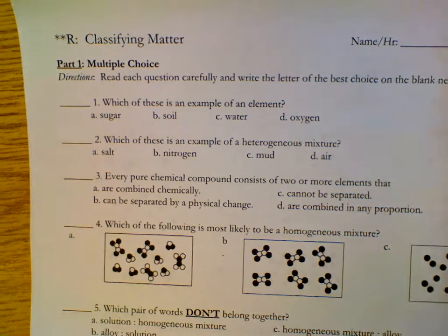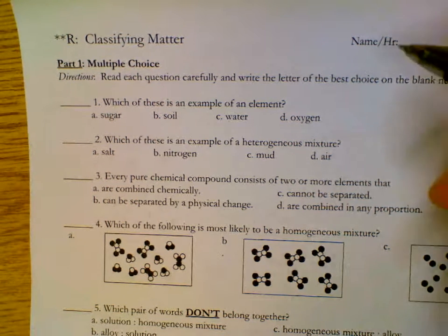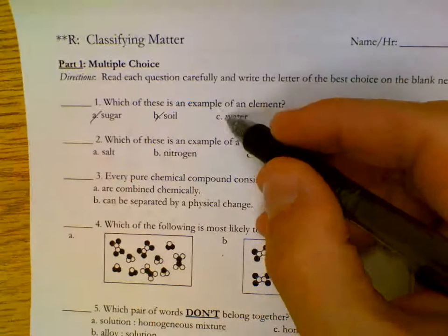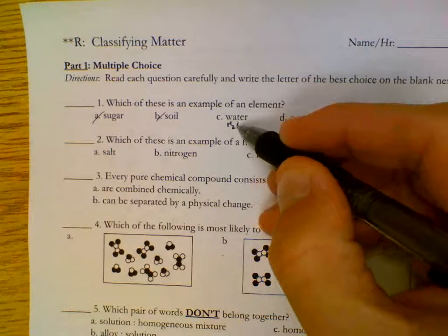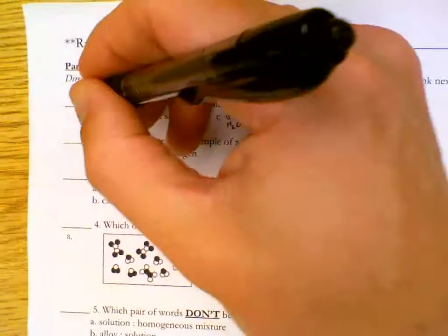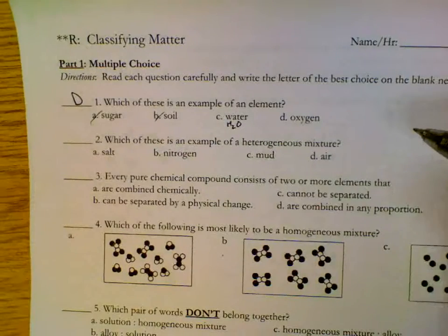Which of these is an example of an element? Elements are found on the periodic table. Sugar is not found. Soil is not found on the periodic table. Water is H2O. A lot of students picked that one accidentally, but since it has two elements, that's not correct. D, oxygen is correct.